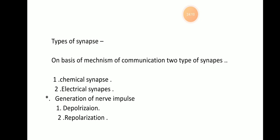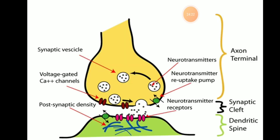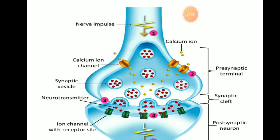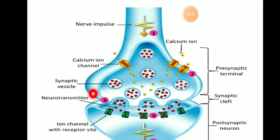Now we will turn to the types of synaptic communication. Two types are present: the chemical synapse and the electrical synapse. The chemical synapse requires three components: the pre-synaptic membrane or terminal, the synaptic cleft, and the post-synaptic membrane. The axonic end has the pre-synaptic membrane.